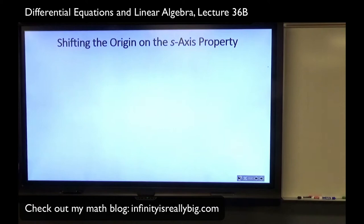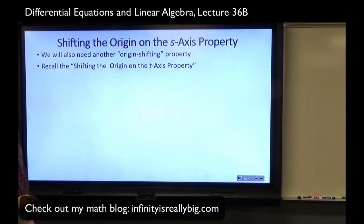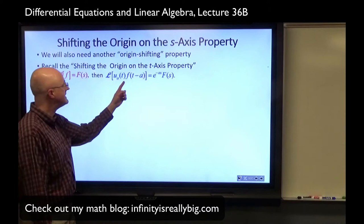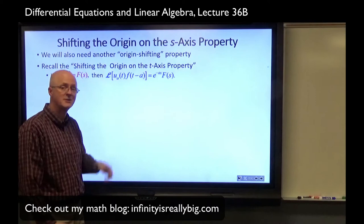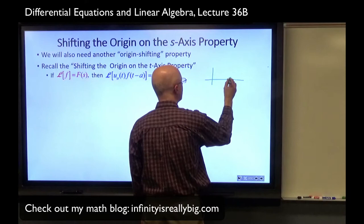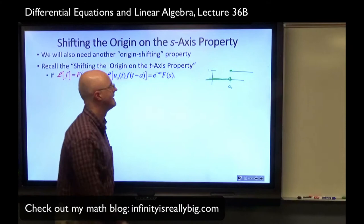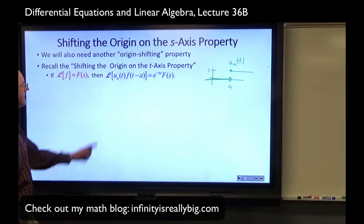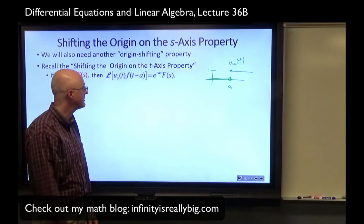We need a new property: the shifting of the origin on the s-axis property. Recall first the shifting the origin on the t-axis property from lecture 35b: if L{f} = F(s), then L{u_a(t)·f(t−a)} = e^{−as}·F(s), where u_a is the unit step function with jump discontinuity at t = a — it is 0 for t < a and jumps to 1 for t ≥ a. This is a shifted version of the original f(t) shifted to the right by a units.